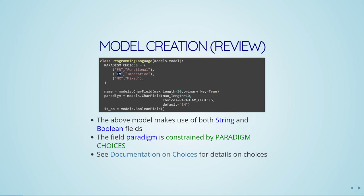You're basically going to limit what strings could be inserted into this table. If I try to insert something that isn't one of these choices, it'll throw an error. It'll store a shortened version like FR, IM, or MX in the database and show the human-readable version correspondingly. I'm also going to make use of the default field — you can specify a default for when you don't specify what this field is when creating a record.